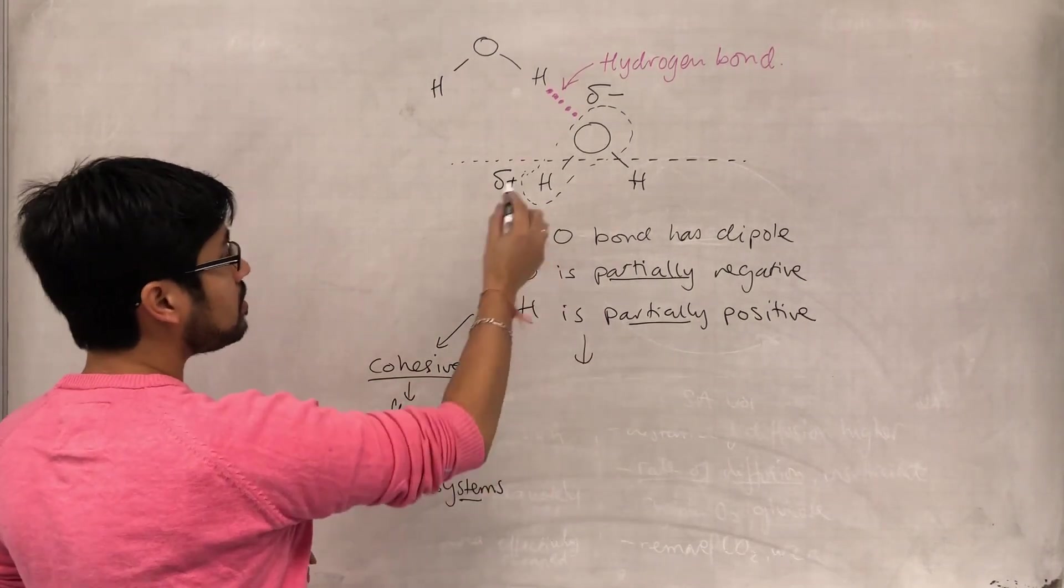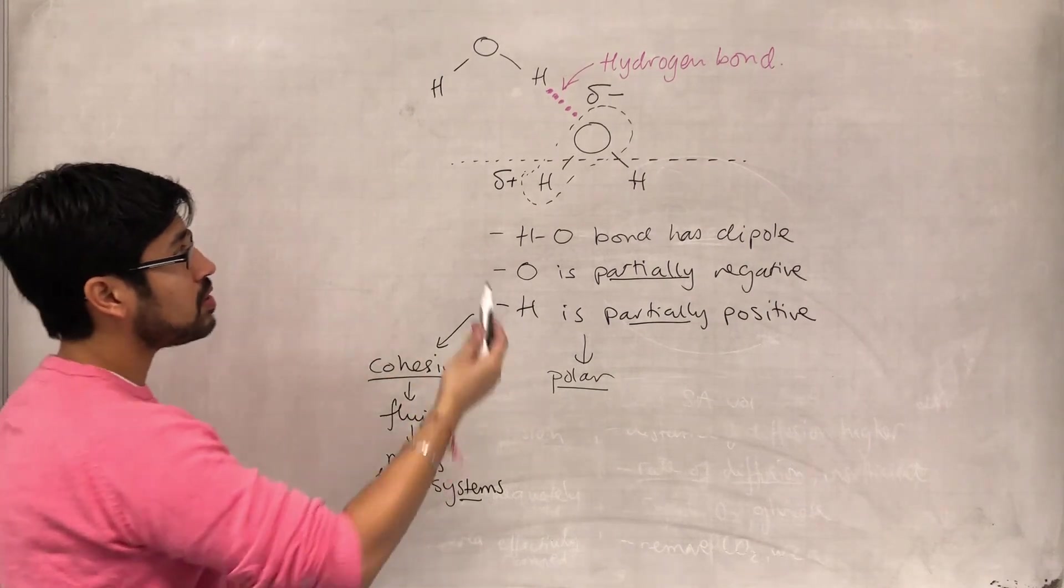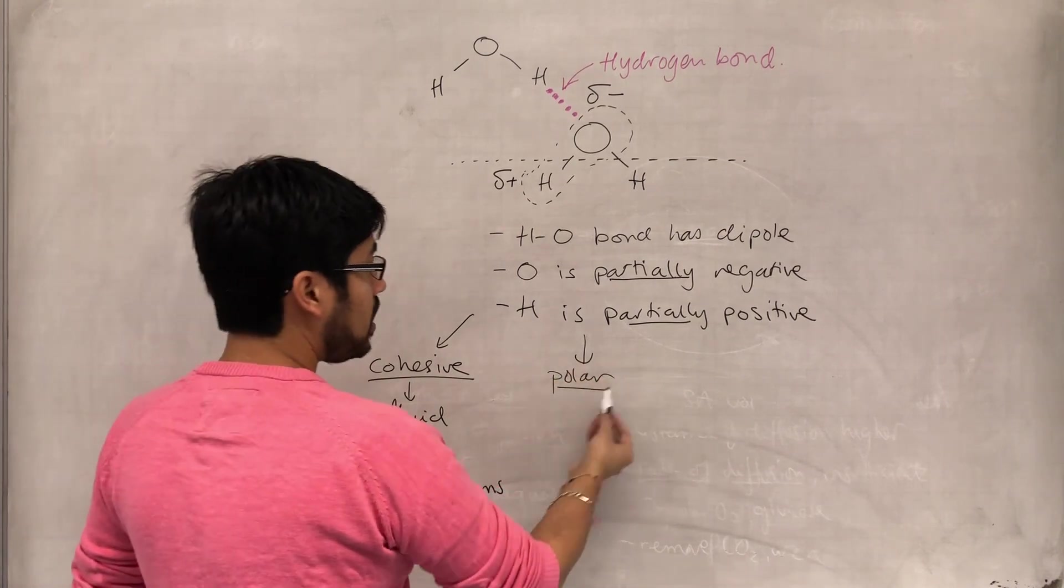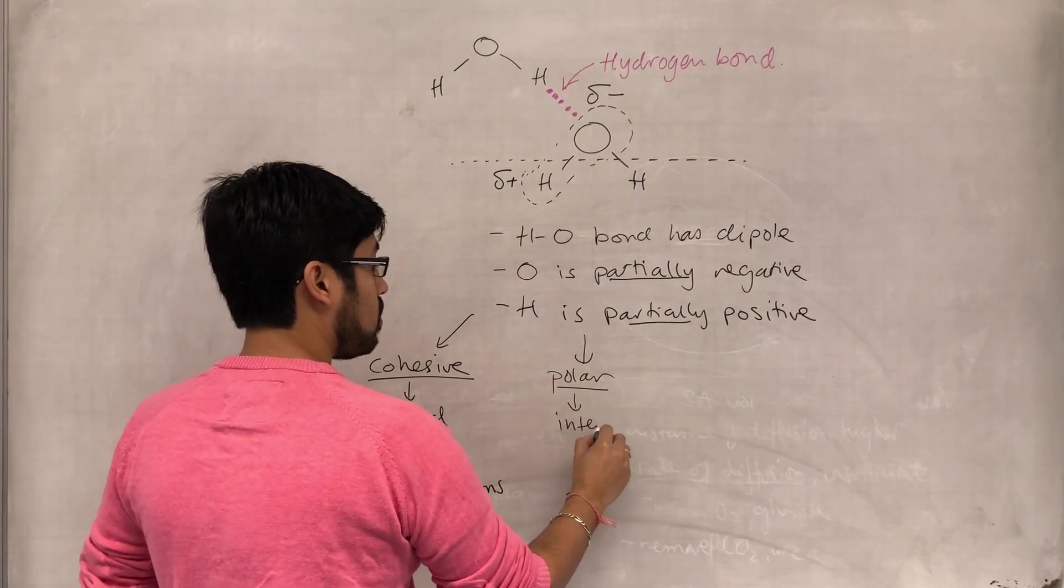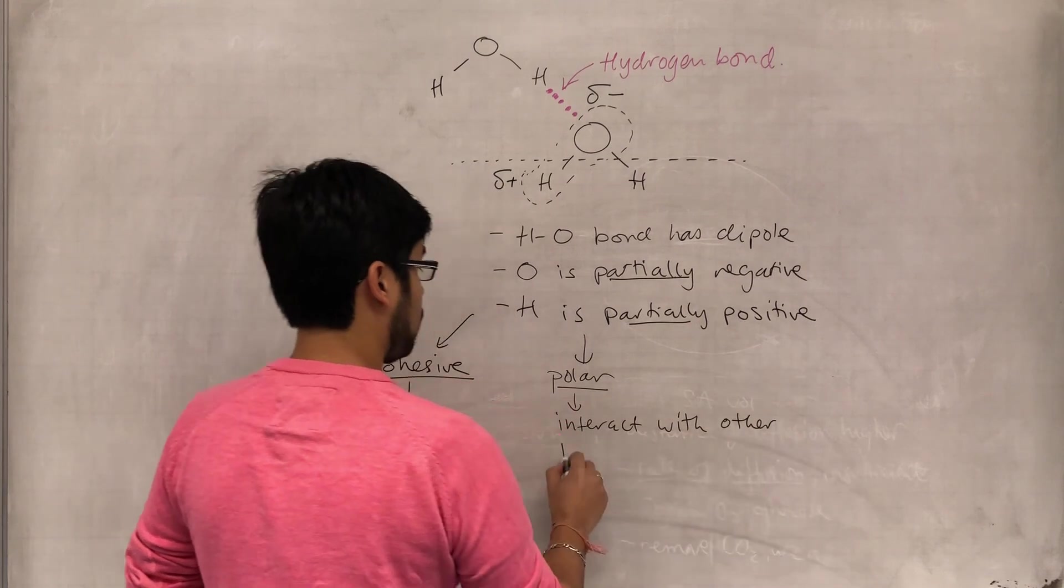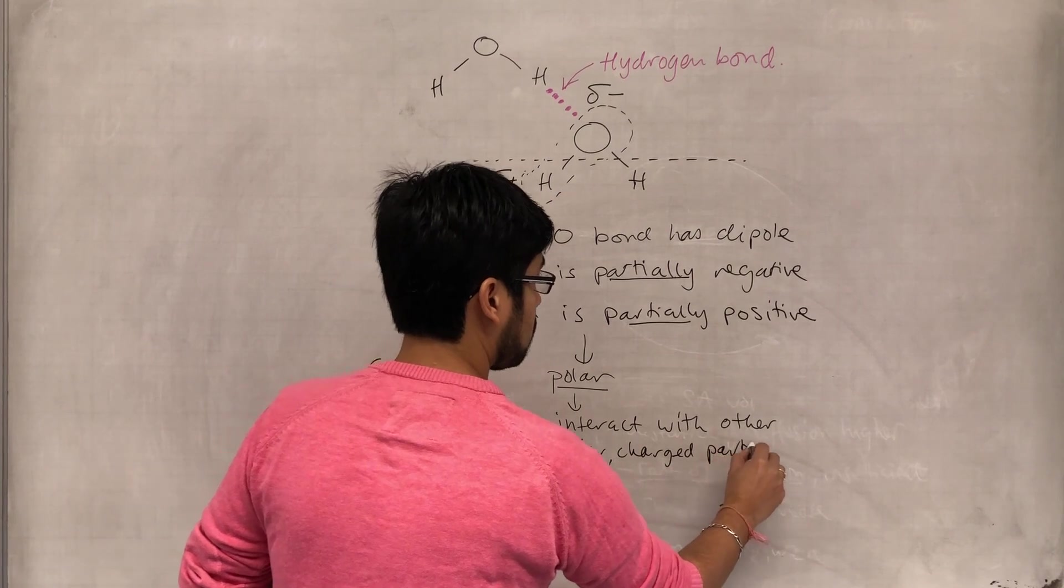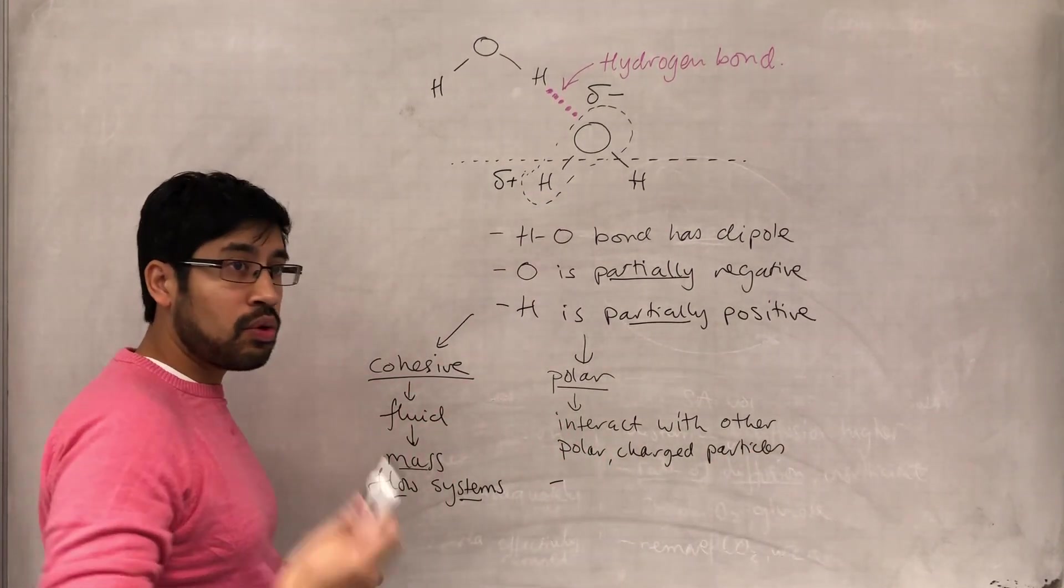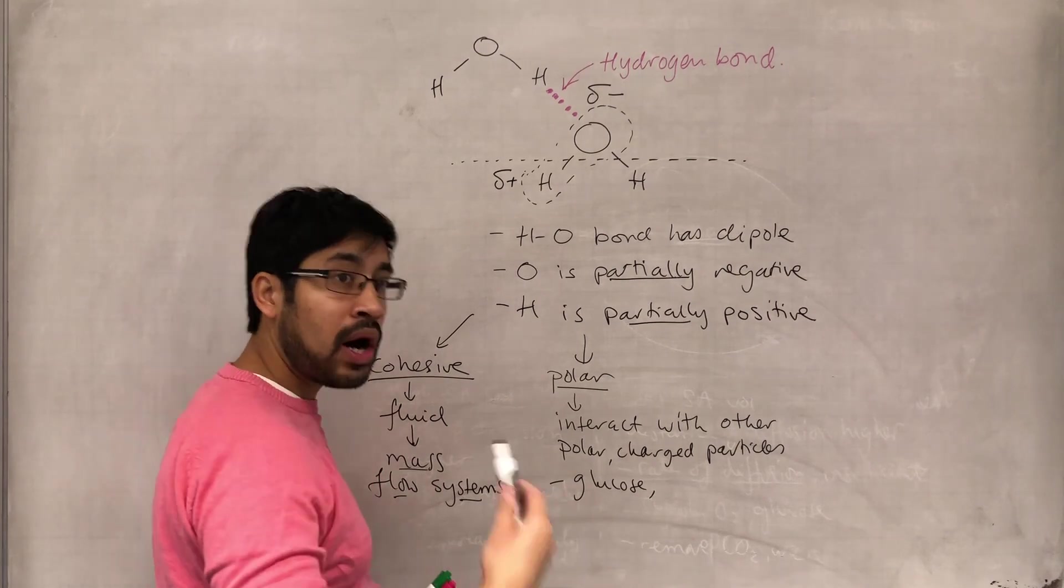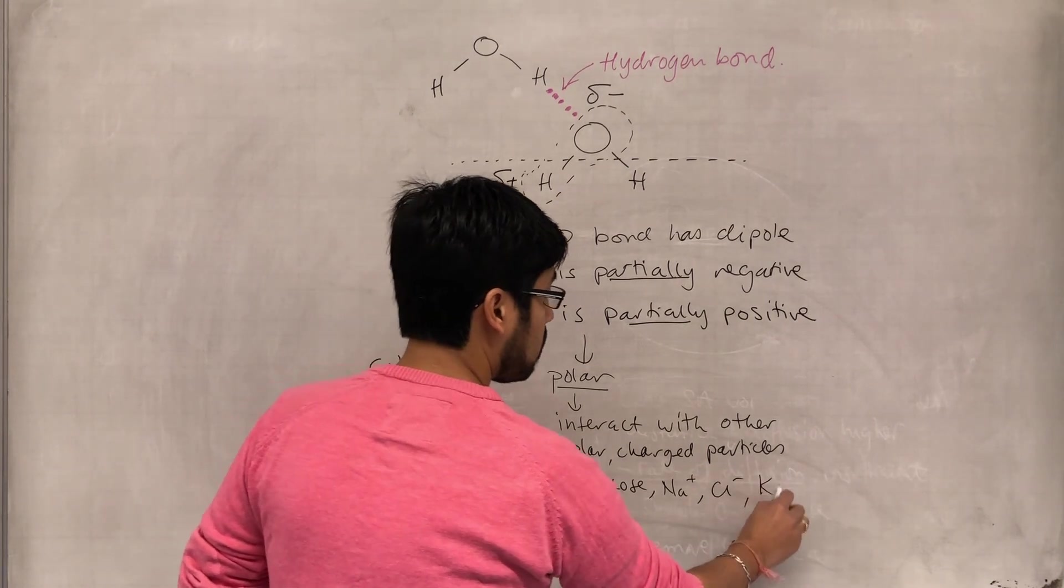Now, the other thing is that because water is polar, because water has these slightly positive and slightly negative charges, it can then interact with other polar or charged particles. And so what we're talking about here is things like glucose, things like ions such as sodium, chloride, potassium, amino acids.